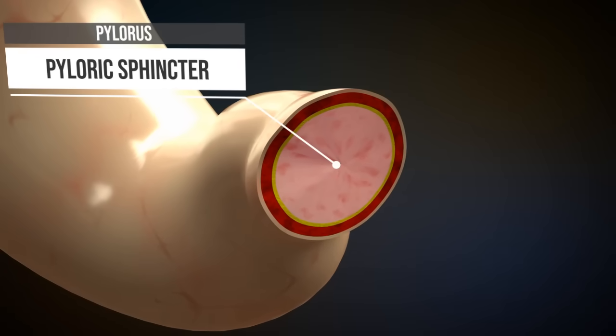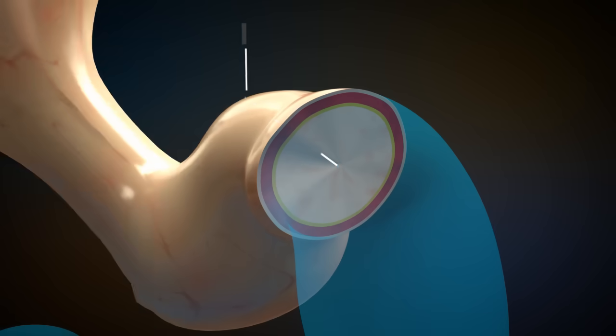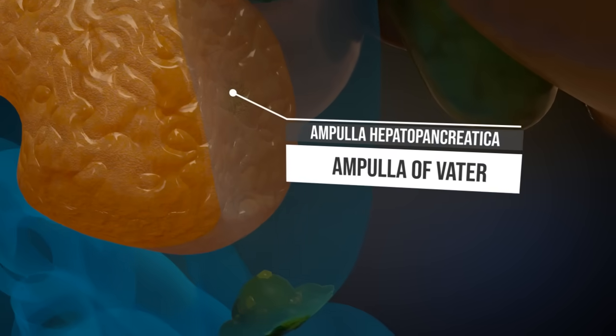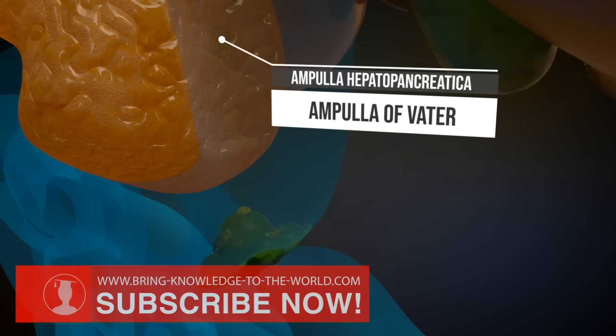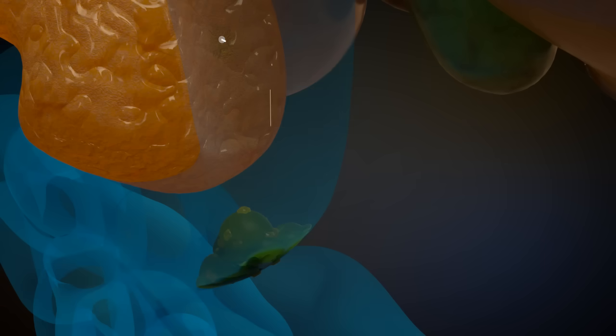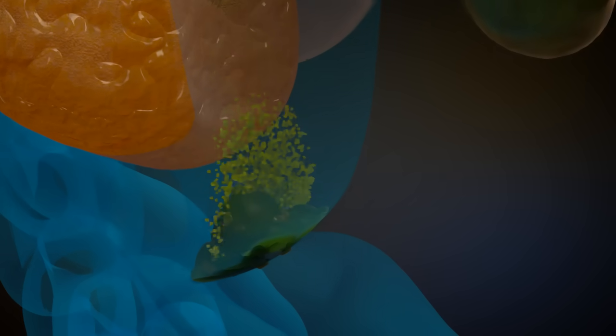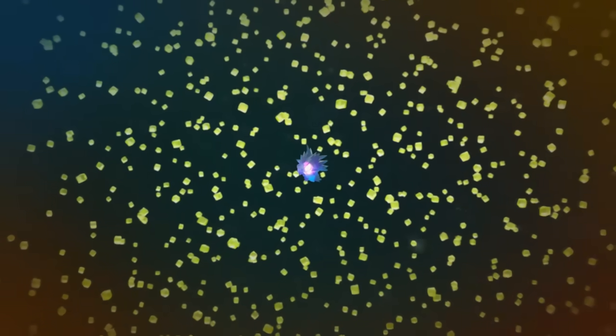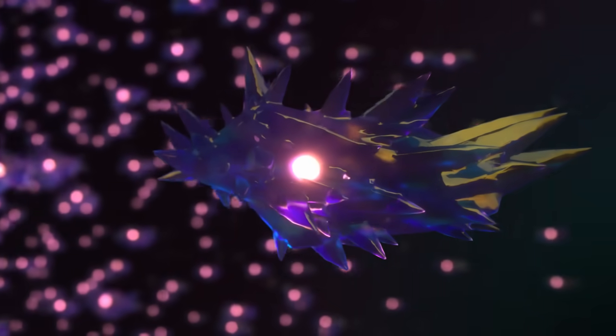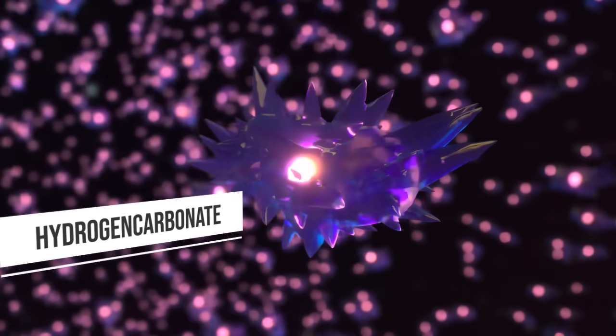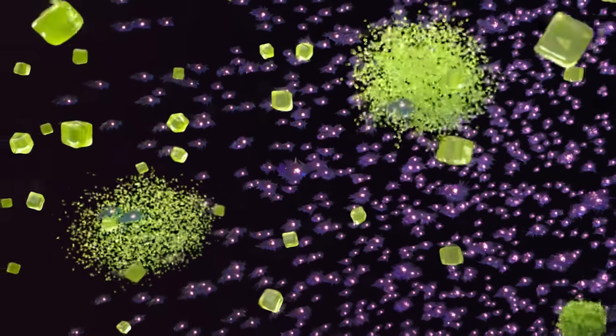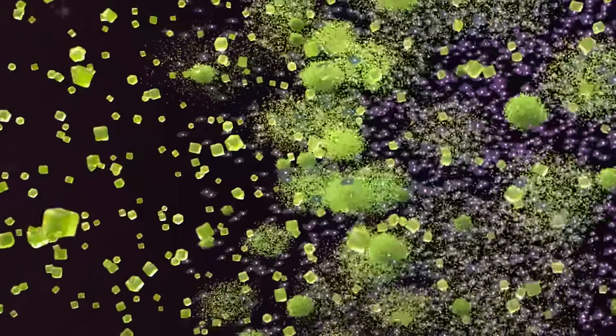In the first section of the small intestine, the duodenum, bile and pancreatic secretions are mixed with the chyme via the ampulla of Vater. Pancreatic juice contains numerous digestive proenzymes and enzymes. In order for these to do their job, a higher pH value than that in the stomach is necessary. For this reason, pancreatic juice contains sodium hydrogen carbonate, which is able to neutralize the acid in the chyme and thus produce the optimum pH value of seven or eight.